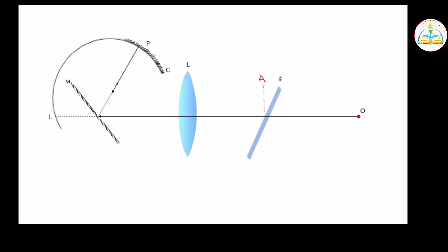The plane mirror is a rotating type of plane mirror. The ray of light reflects back, and at point P the ray of light is vertical and opposite. The angle 2 theta is equal to 2 theta.